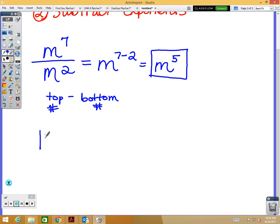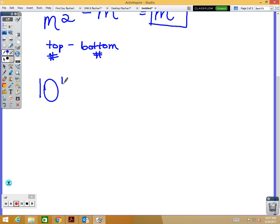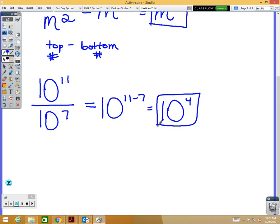Alright, if you have your base as an actual number instead of an exponent, that always looks a little bit more confusing. So let's do one of those. 10 to the 11th power over 10 to the 7th power. Your base is 10. And we're doing 11 minus 7, which is 4. So again, it looks a little bit harder, I think, when your base is a number.